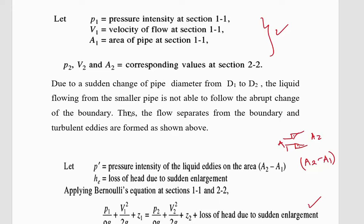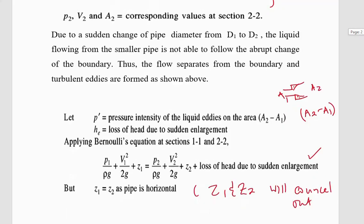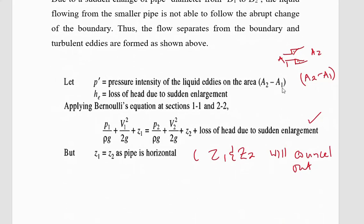In other words, as the flow progresses it has to make a gradual adjustment to ensure continuity of the fluid, but it will not be able to occupy some spaces near the section where there is an abrupt change in diameter. Thus the flow separates from the boundary and turbulent eddies are formed as shown above, and these are the ones that result in the head loss. Therefore, if P' is the pressure exerted by the liquid eddies on the area (A2 minus A1), and given that A1 is smaller than A2, the region occupied by the eddies is (A2 minus A1). The pressure at the eddies section is P', and HE is the loss of head due to sudden enlargement.